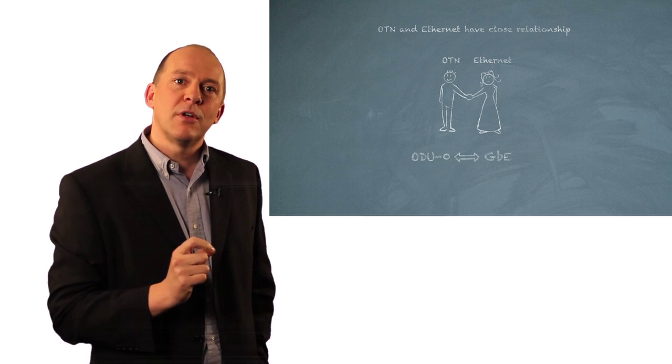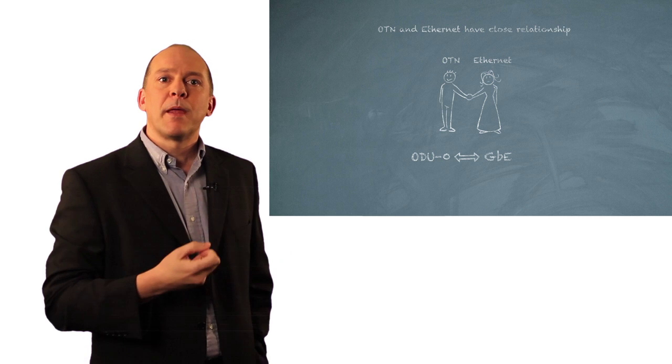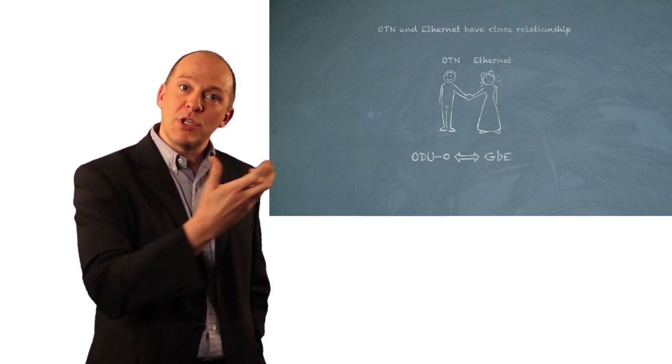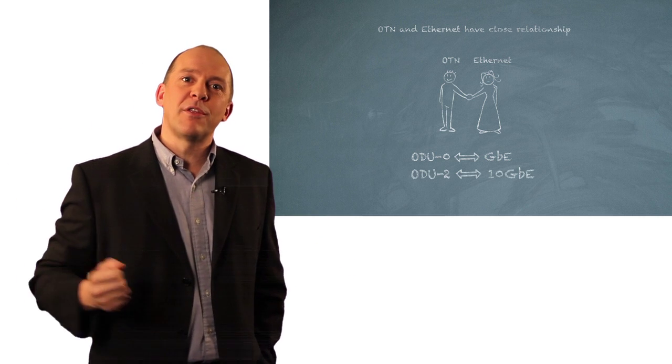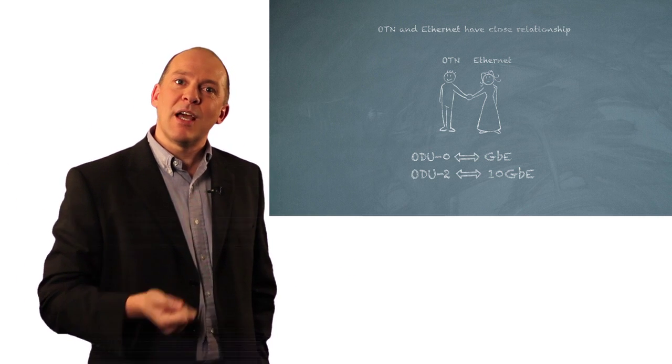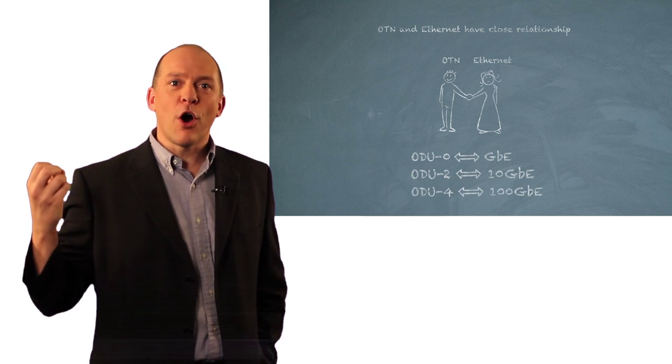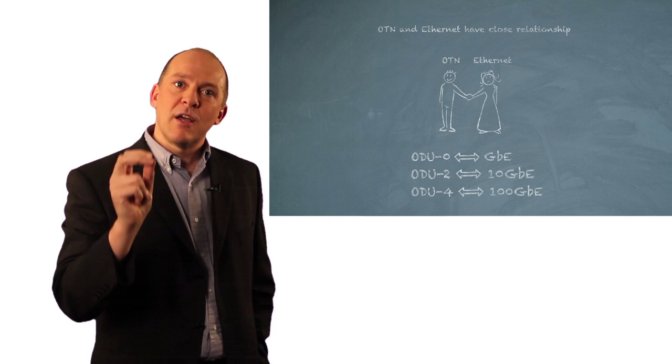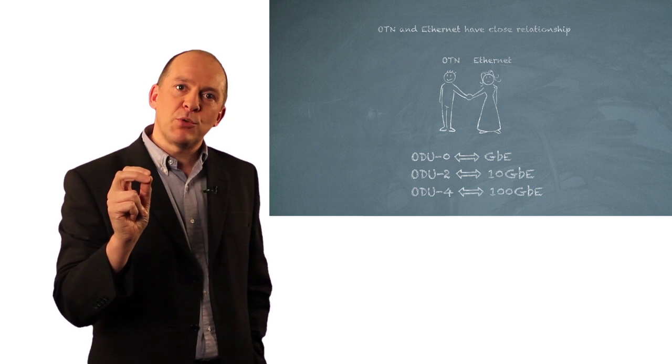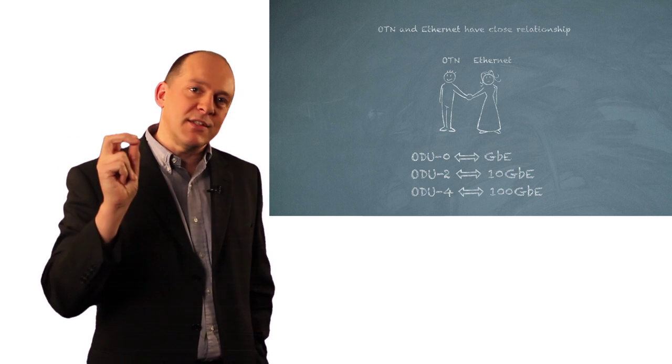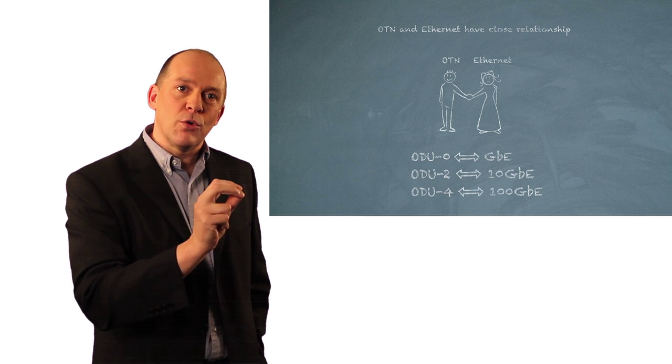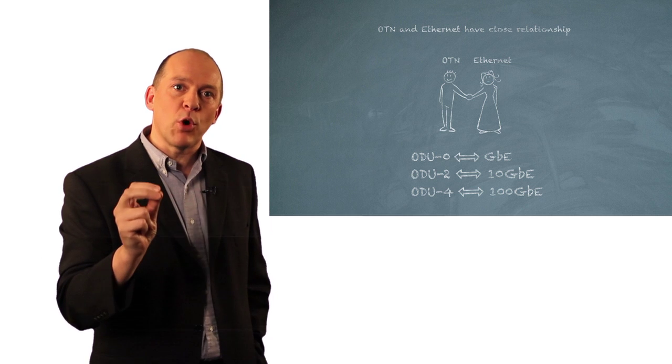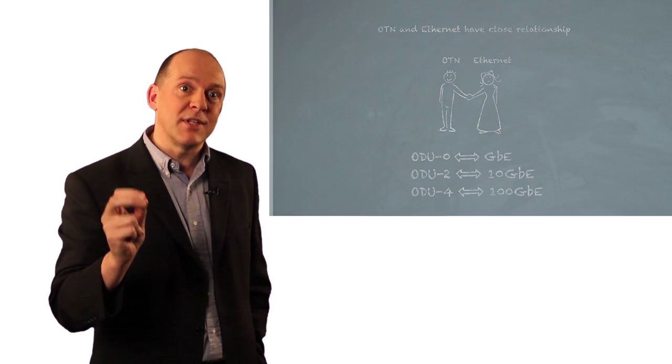You have the ODU0 in the OTN world and the Gigabit Ethernet in the IEEE Ethernet world. The ODU2 aligns with the 10 Gigabit Ethernet and the ODU4 aligns with the 100 Gigabit Ethernet. So we're seeing in the standards world very close cooperation between the IEEE, the IETF and the ITU in terms of making sure that all these technologies work closely to make sure that this network is going to take us a long time into the future.